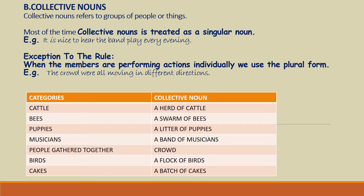Collective nouns refer to a group of people or things. Most of the time, collective nouns are treated as a singular noun. For example: it is nice to hear the band play every evening. However, there is an exception to this rule — when the members are performing actions individually, we use the plural form. For example, the crowd were all moving in different directions.